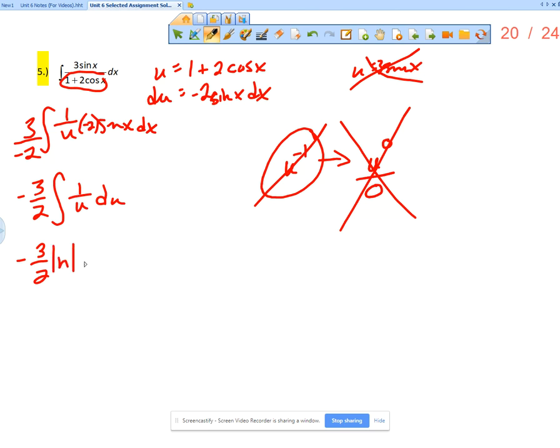Leave it as 1 over u, which will hopefully prompt you to remember that the integral of 1 over u is natural log of the absolute value of u, plus c. So negative 3 halves, natural log of the absolute value of u, which is 1 plus 2 cosine x plus c.